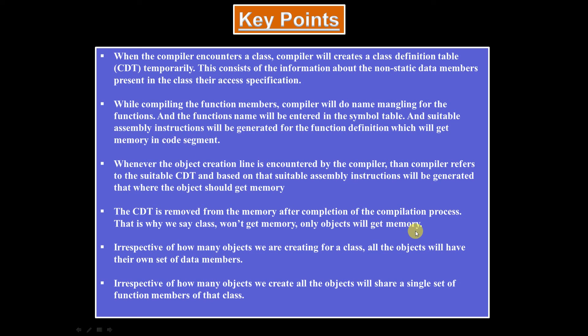Whenever an object creation line is encountered, the compiler refers to the class definition table and generates suitable assembly instructions for memory allocation. The CDT is removed after the compilation process — that's why we say the class won't get memory, only objects will. It's like a blueprint for constructing a house: you refer to it while constructing, and once done, you can set it aside. All objects share a single set of function members. How functions differentiate which object to work on is based on the 'this' pointer — that will be covered in the next session.